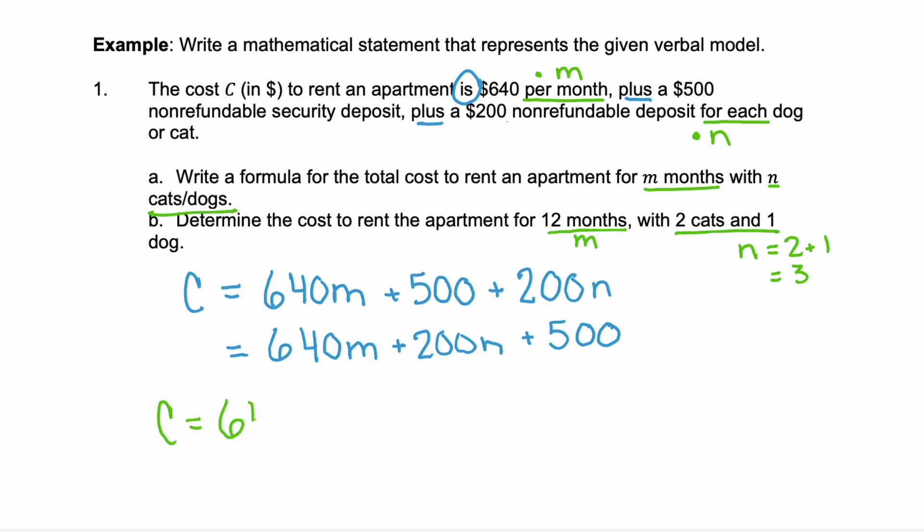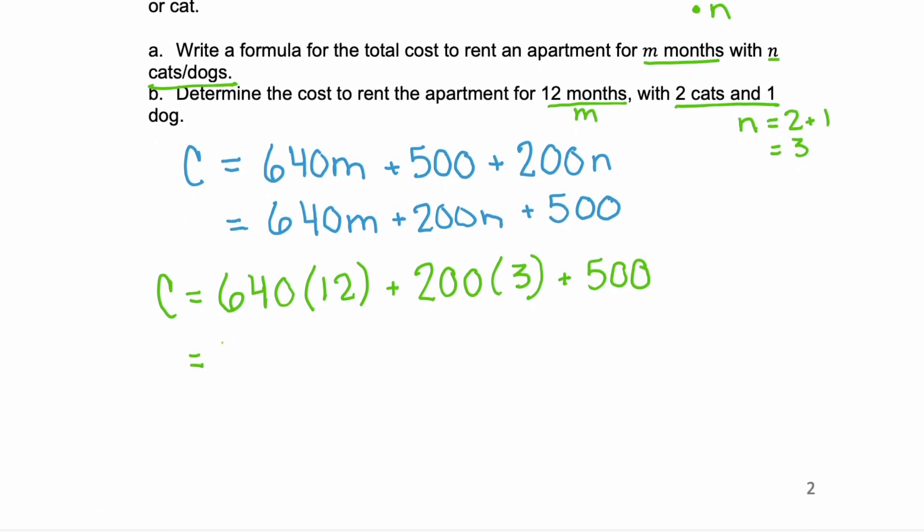So, our cost then will be $640 times M, which is 12, plus 200 times 3, plus that $500 security deposit. $640 a month times 12 months is $7,680. Plus $200 for each of our pets, that's $600, plus $500. Add those three values together and the total cost is $8,780.